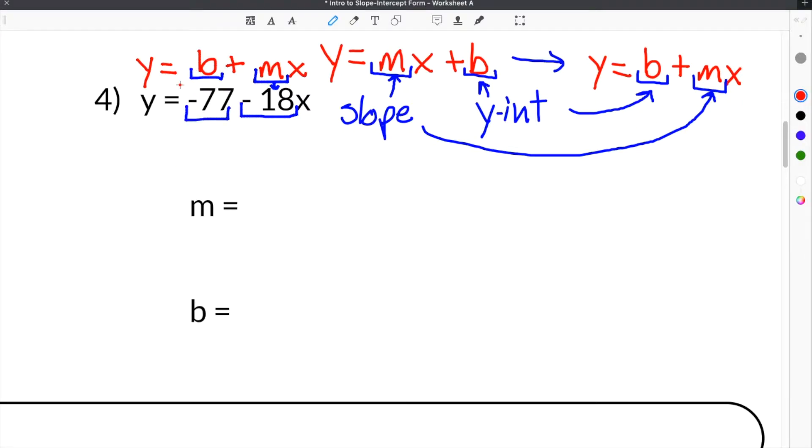Now that we know that our equation is written in Y equals B plus MX, if you look at the slope, the slope is going to be the negative 18 because it's the coefficient on the X. And if you look at the Y-intercept, the Y-intercept is the constant that is not attached to the X, which in this case is negative 77.